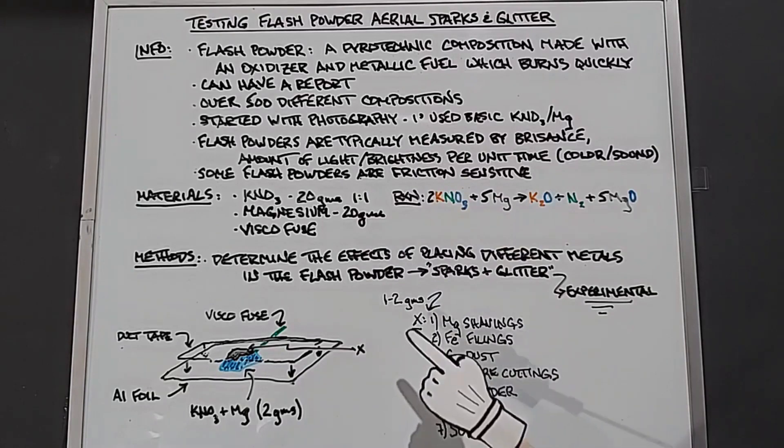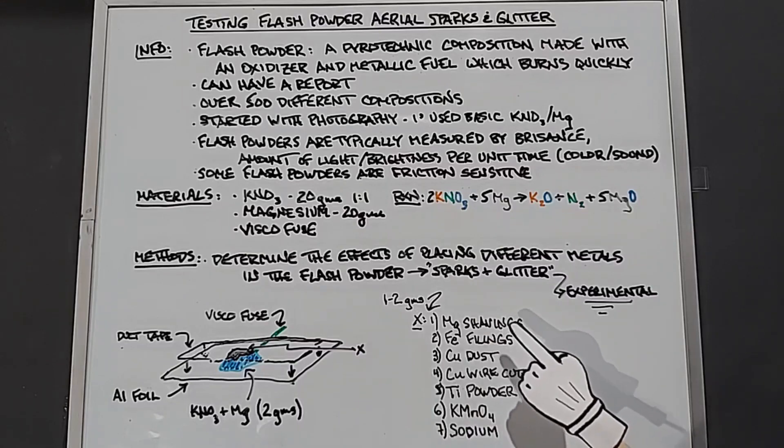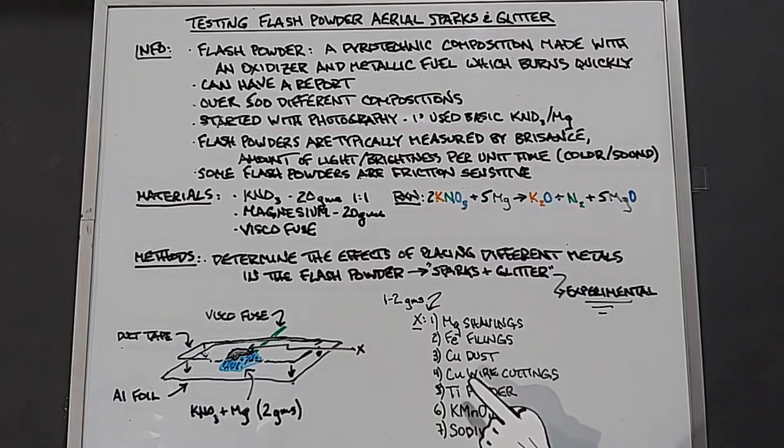Anyway, X, which I plan on using between one and two grams on top of the flash powder: magnesium shavings, iron shavings or filings, copper dust, copper wire cuttings, and this would be the braided copper wire, titanium powder, a pile of potassium permanganate, and lastly a chunk of sodium.